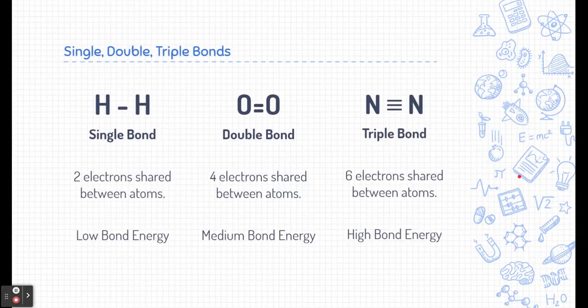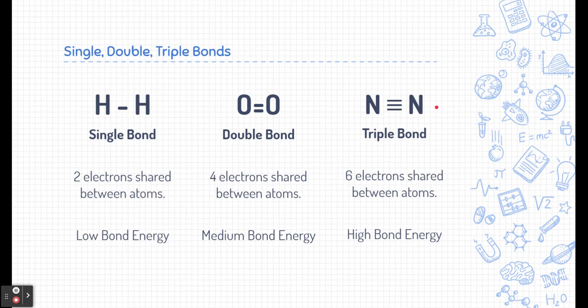You might have noticed in that previous table that some bonds have a single line between them, some of a double or some of a triple. These are different types of bonds. Typically a single bond is between two elements when they share two electrons. We designate that with one line. These types of bonds have low bond energies. Sometimes elements can come together and form double bonds. These are where four electrons are shared between atoms and there's a medium amount of bond energy. When six electrons are shared between atoms there's a high amount of bond energy needed to either break this bond or released when the bond is formed.